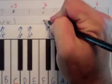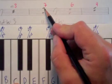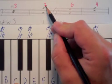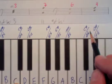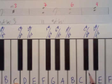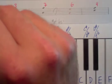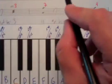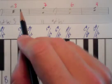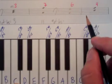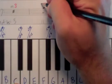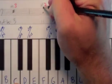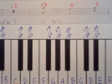So eleven half steps from C going up to B. The generic interval is a seventh — vertical column of seventh, horizontal column of eleven half steps — and where that meets, this is a major seventh.